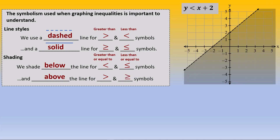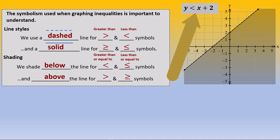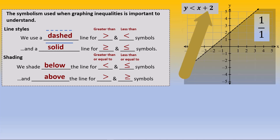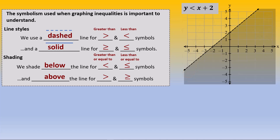Here is an example of an inequality and its graph: y is less than x plus 2. Notice it is in slope-intercept form, except it has the less than symbol instead of the equal sign. The slope, the coefficient value of x, is 1, which means a rise of 1 and a run of 1. The y-intercept is 2, and so the line on the graph has a slope of 1 over 1 passing through the y-axis at 2. The line is also dashed, since the inequality symbol does not include the equal sign.